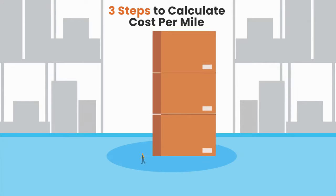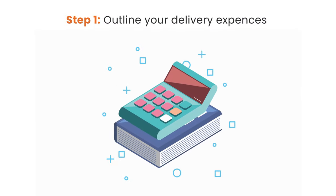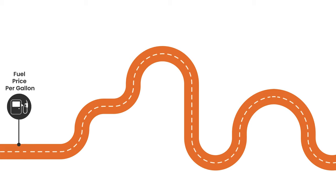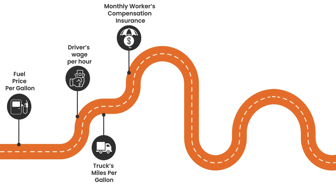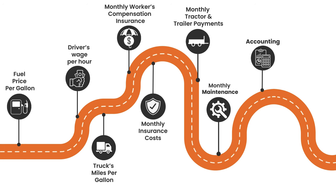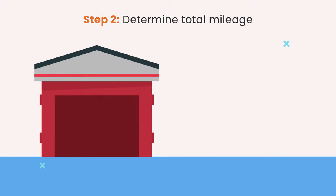We'll walk you through three simple steps to calculate this metric. Step 1: Outline your total delivery expenses. Consider factors like fuel price per gallon, driver's wage per hour, truck's miles per gallon, monthly workers' compensation insurance, monthly insurance costs, monthly tractor and trailer payments, maintenance costs, accounting, interest rate parity (IRP) payment, and licensing and subscription expenses.